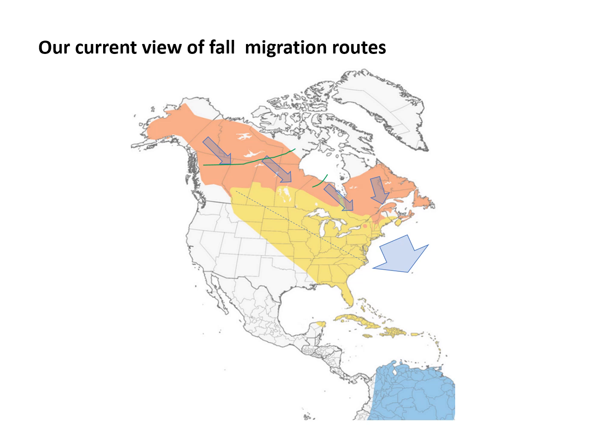This map shows what we think the fall routes are like when we put all our data together. In the fall the birds do not use the southwestern part of the migration range, shown in yellow, and they don't come much further south than the Great Lakes, as indicated by the dashed blue line through the U.S.